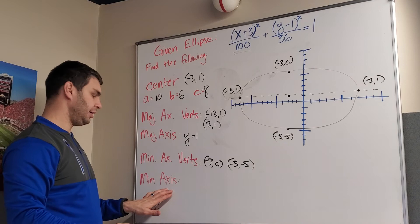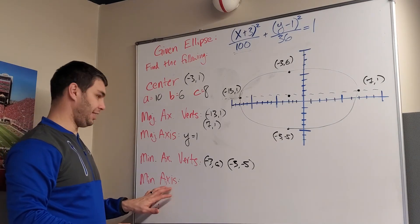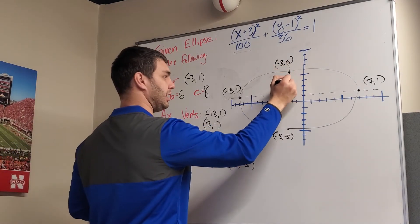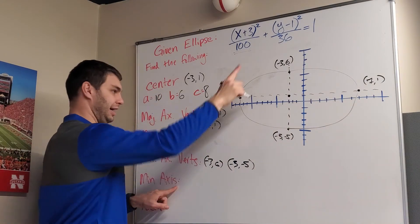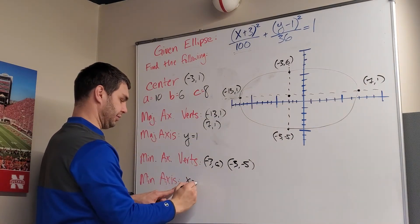And same thing for my minor axis. If I draw a dotted line the other way, everything on that is on the line x = -3.